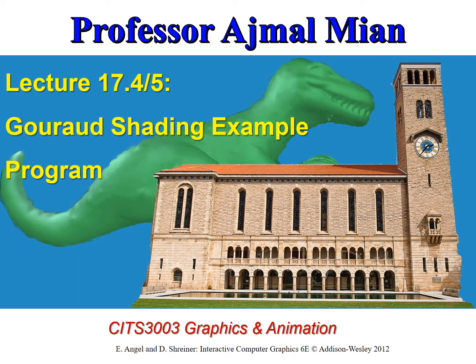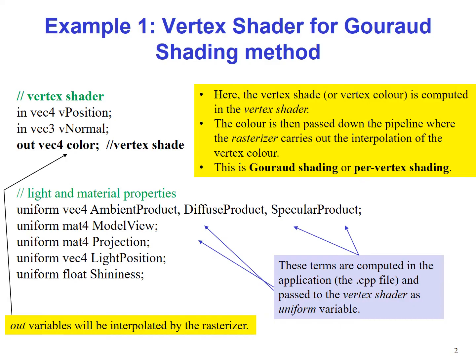Let us look at an example program of Gouraud shading. Here we have the GLSL vertex shader program. We get vPosition as an input variable with the qualifier 'in', and we get the vertex normal also as an input variable. Our output variable is the per-vertex color, so colors of every vertex. This would be passed down the pipeline to the rasterizer, which will carry out the interpolation of the vertex colors.